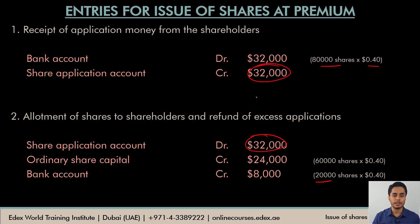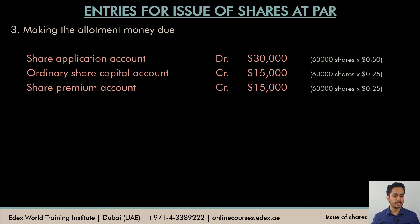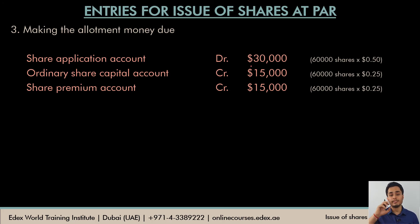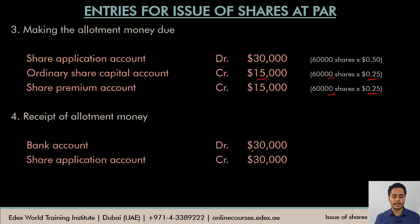Next, the company asks shareholders to pay the allotment money of $0.5 per share. The share application account is debited by 60,000 × $0.5 = $30,000. The $0.5 per share is made up of $0.25 as premium and $0.25 as face value. Remember: the share capital account is always credited only with the face value, not the premium. The premium goes to a separate share premium account. So $0.25 face value × 60,000 goes to ordinary share capital and $0.25 × 60,000 goes to the share premium account. When shareholders pay, bank is debited $30,000 and the share application account is credited and closed.